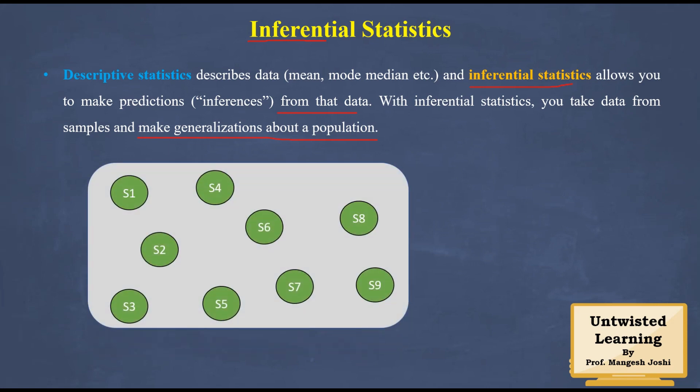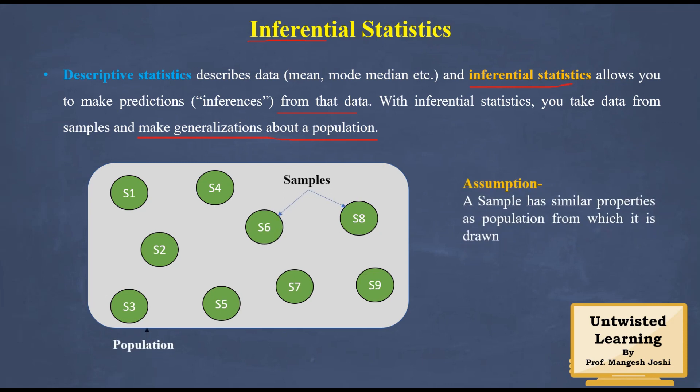Suppose you are conducting your research in a geographical area. This entire area will be called the population, and suppose you select nine houses from that geographical area — those nine houses will be called samples. Your population may contain a hundred or thousand houses, and you are selecting nine houses as a sample.